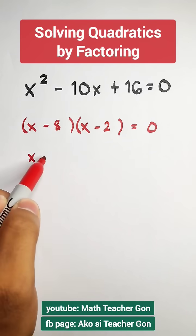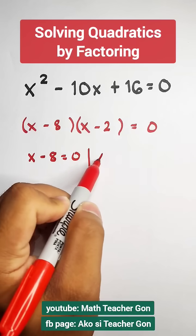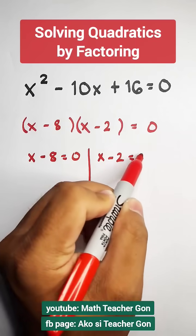So this is x minus 8 is equal to 0, and the other is x minus 2 is equal to 0.